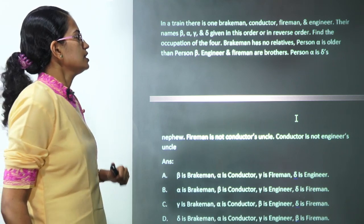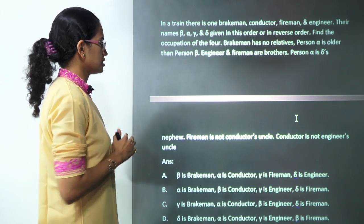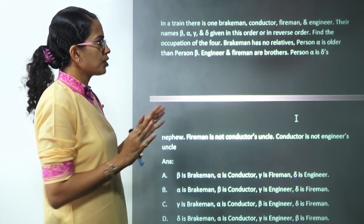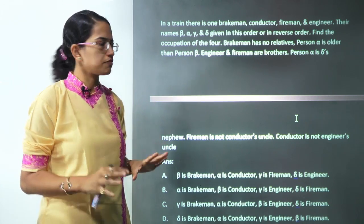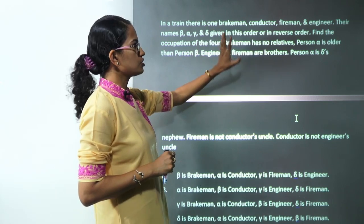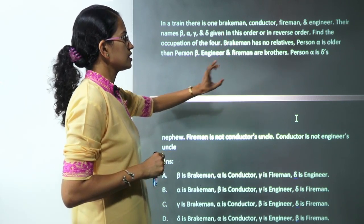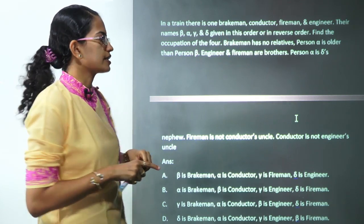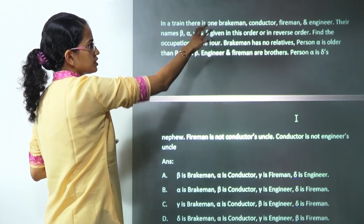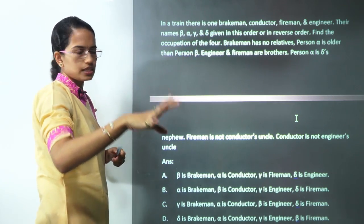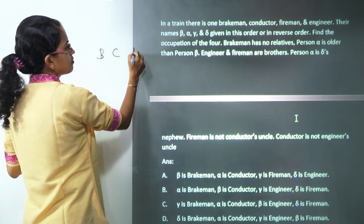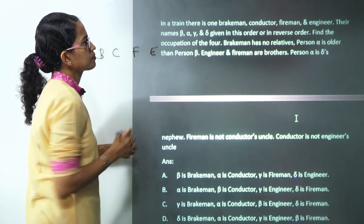The next is a very interesting question — read it carefully. In a train, there are four people, four names, and four professions, one person per occupation. The occupations are: brakeman, conductor, fireman, and engineer. Let's first work through the occupations and then the names.